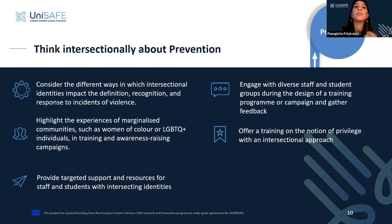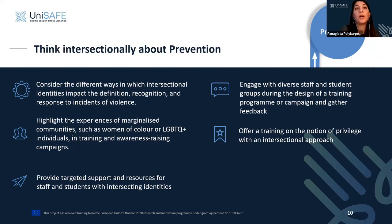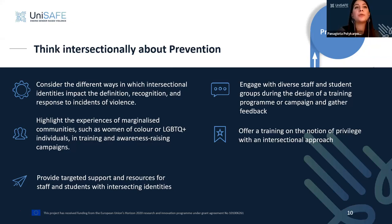Make sure you engage staff and students with diverse backgrounds so they can act as experts or informants during the design of a training program or campaign. Gather their feedback through participatory processes. Training on the notion of privilege with an intersectional approach is important — prevention is also about training staff and students about accepted behaviors and recognizing that gender-based violence affects some groups more than others.